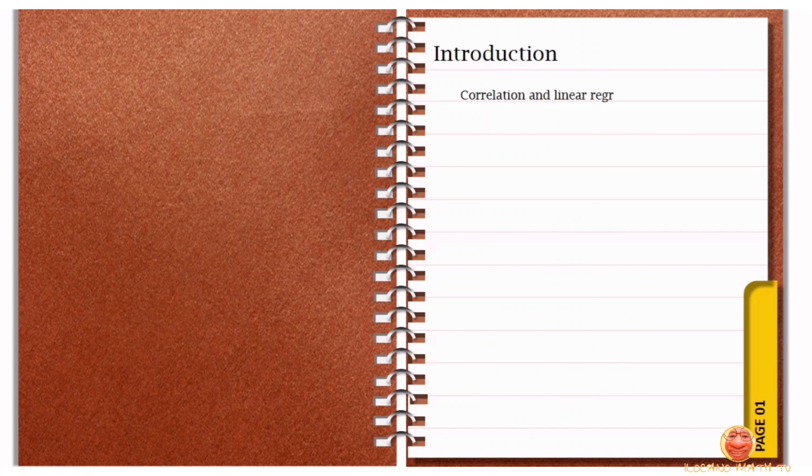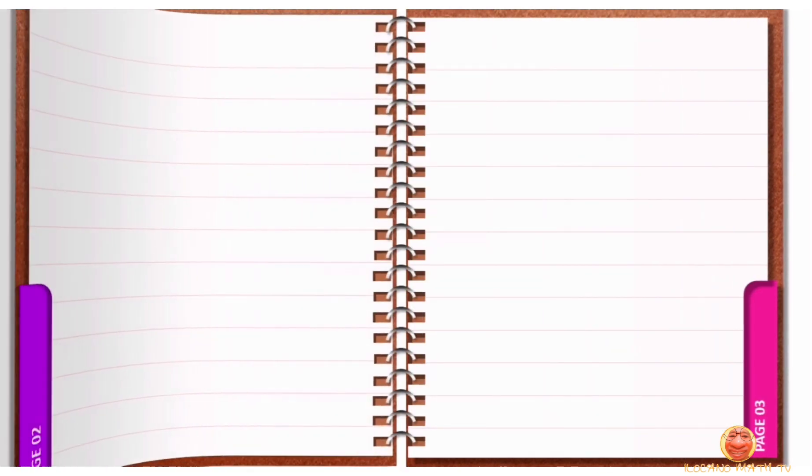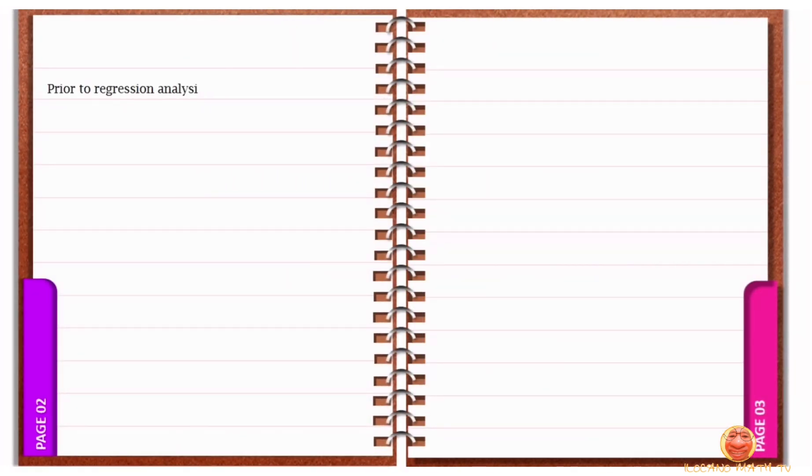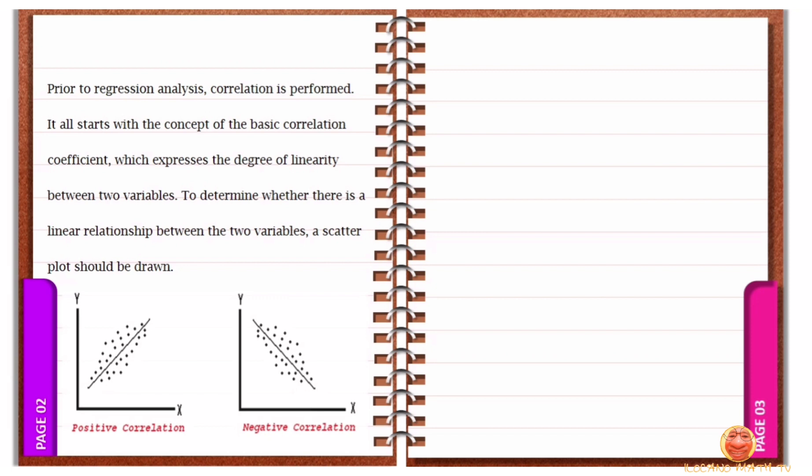The correlation and regression are the most often used approaches for examining the relationship between two quantitative variables. The strength of a linear link between two variables is measured by correlation, whereas regression describes the relationship as an equation. Prior to regression analysis, correlation is performed. It all starts with the concept of the basic correlation coefficient, which expresses the degree of linearity between two variables. To determine whether there is a linear relationship between the two variables, a scatter plot should be drawn.